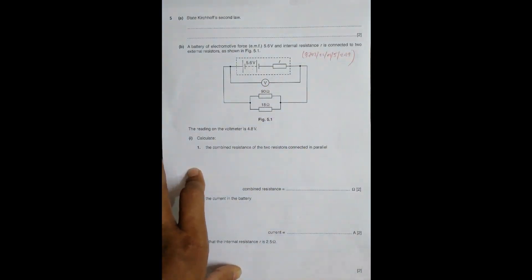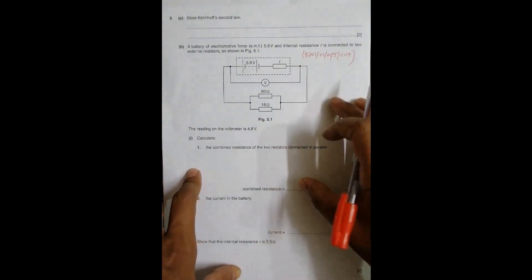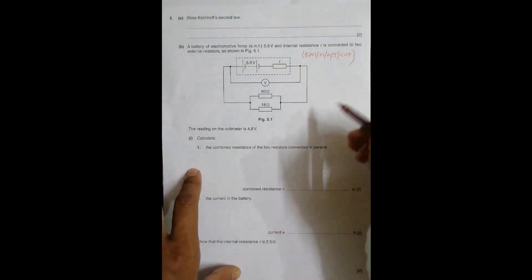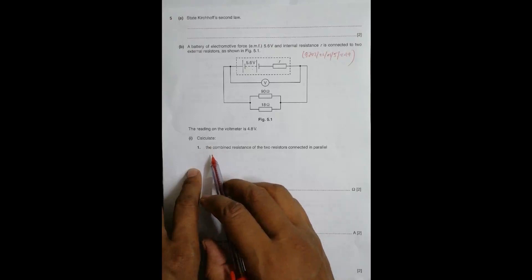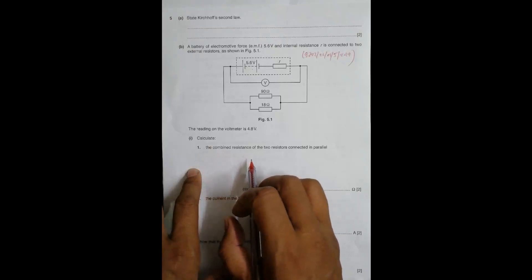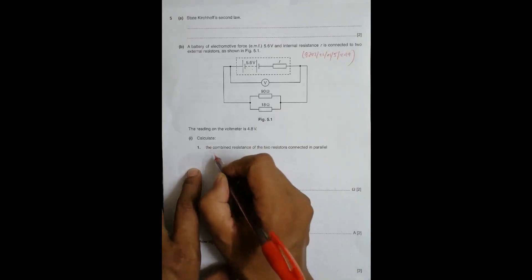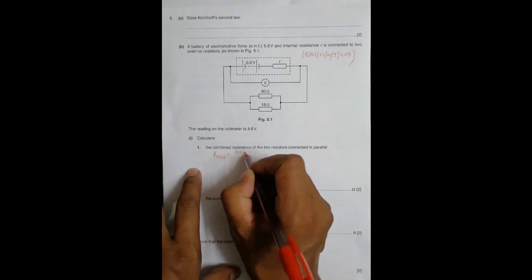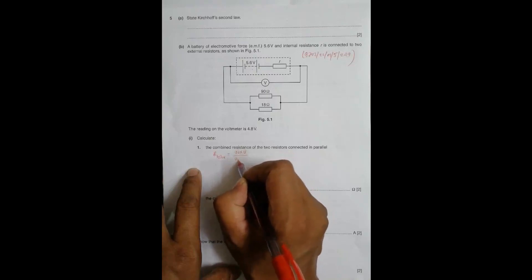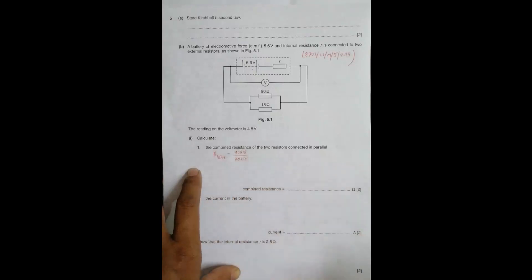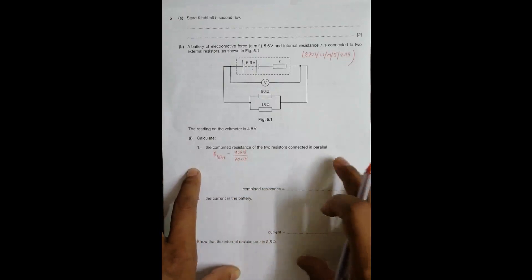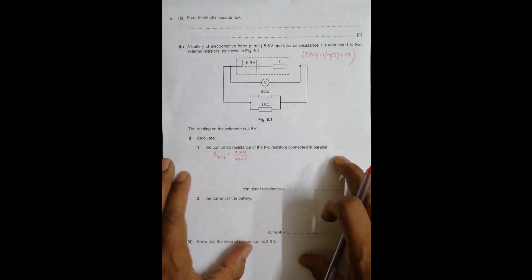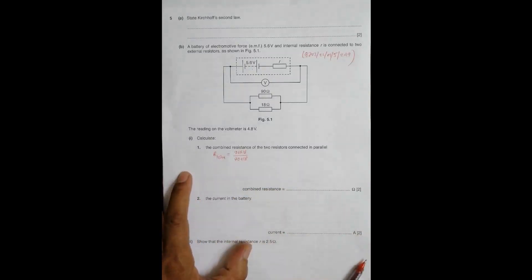First, we calculate the combined resistance of the two resistors connected in parallel. The total parallel resistance equals 90 times 18 divided by 90 plus 18. Using the combined formula, r_parallel equals r1 times r2 divided by r1 plus r2.